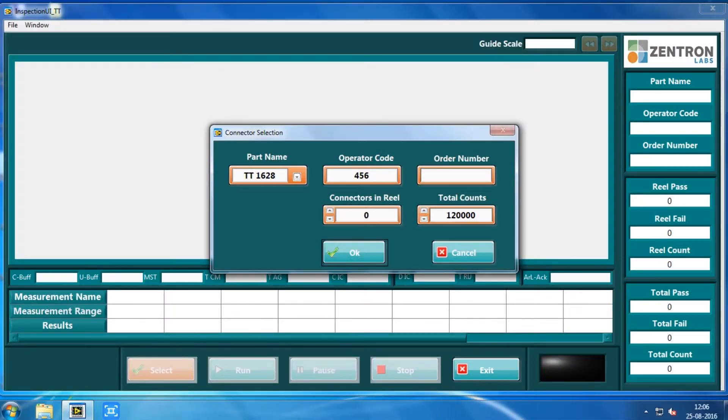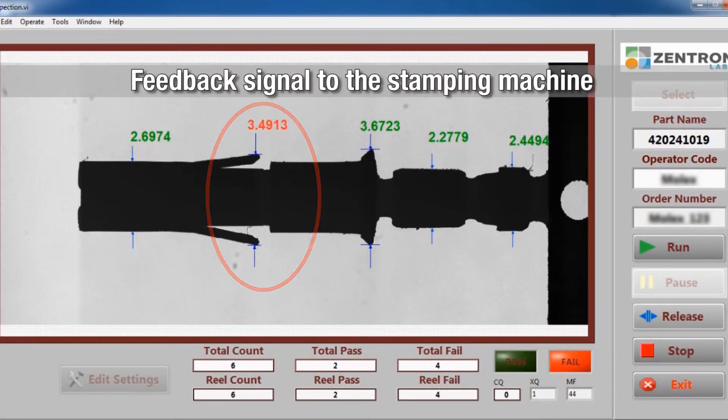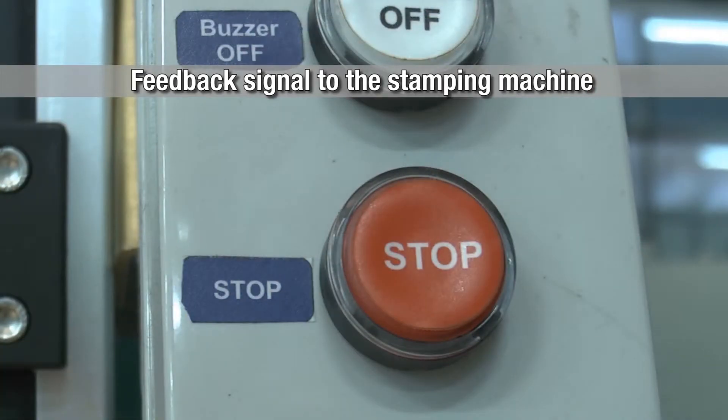Whenever any measurement in a terminal is outside the set tolerance limits, a signal is sent to the stamping machine to stop stamping and the buzzer goes off to alert the operator.